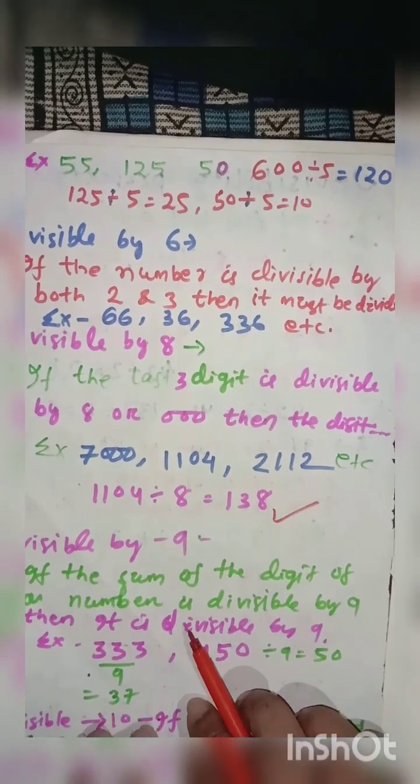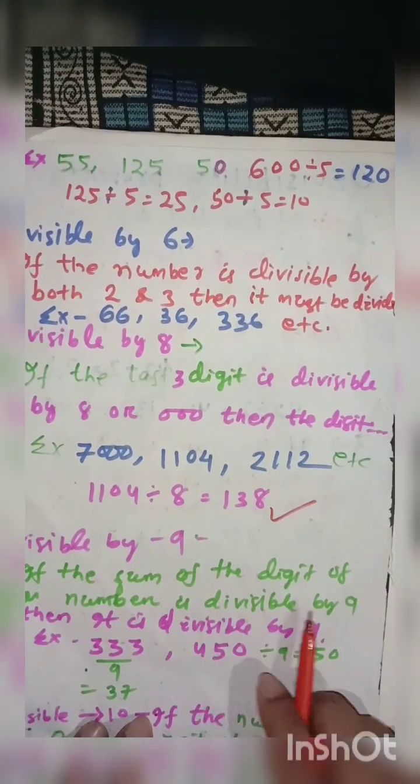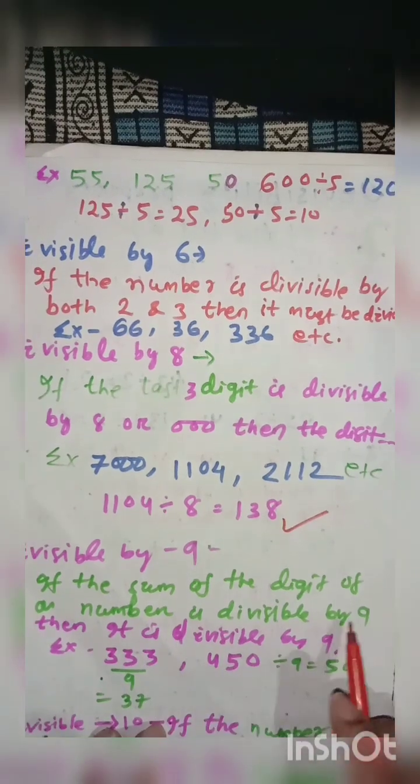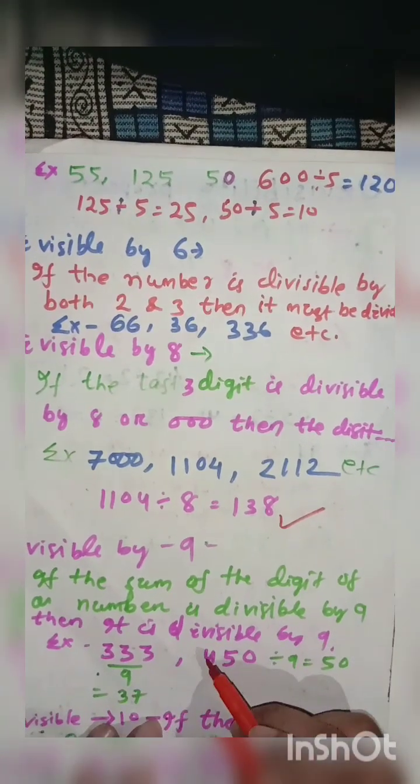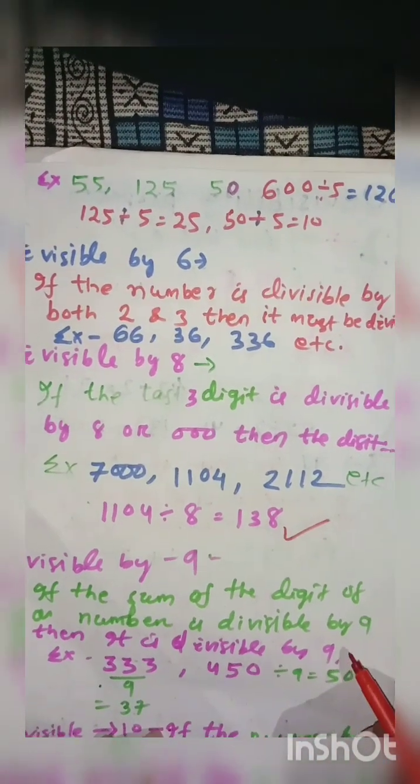Then divisible by 9. If the sum of the digits of a number is divisible by 9, then the original number is divisible by 9 undoubtedly.